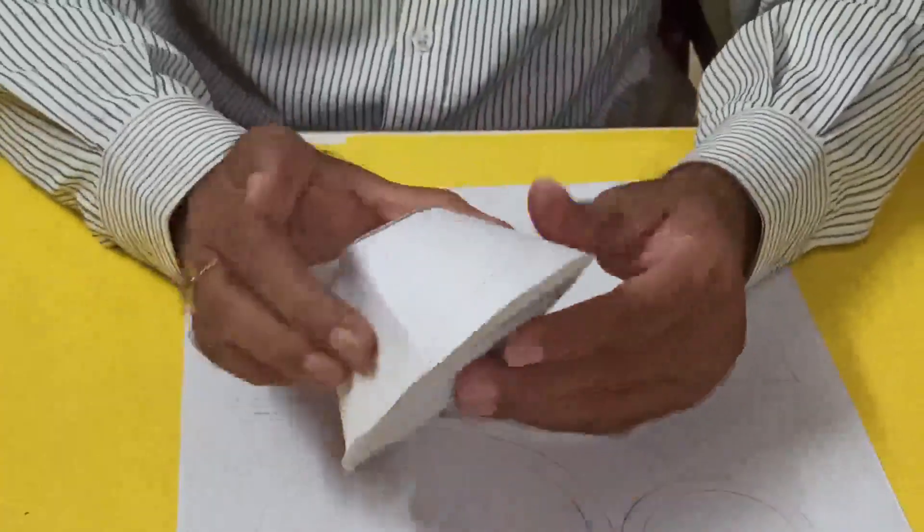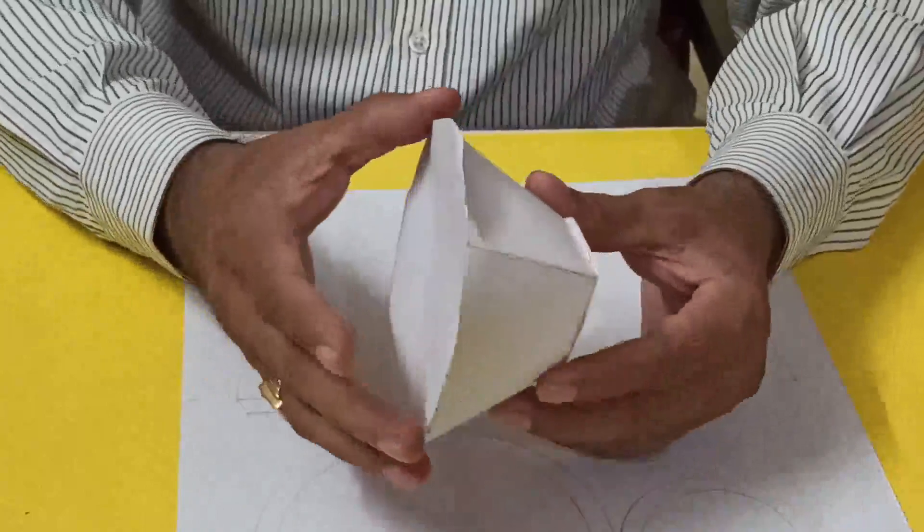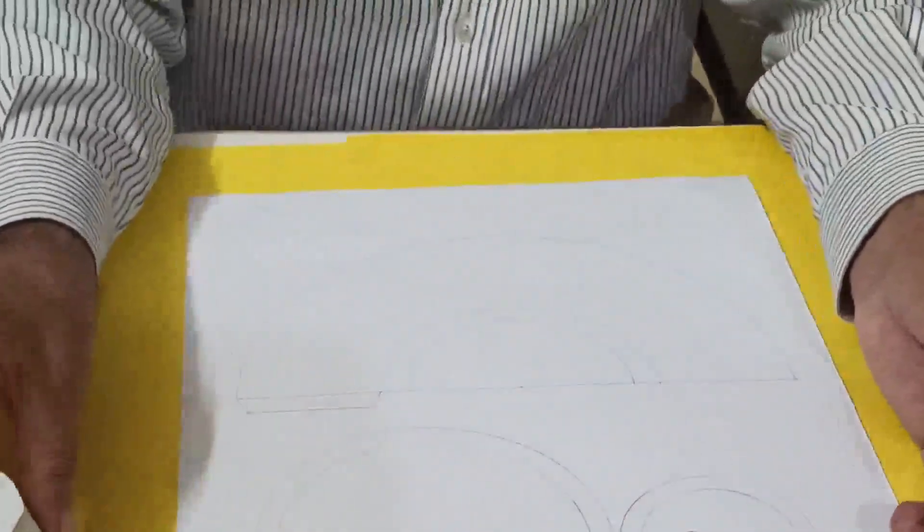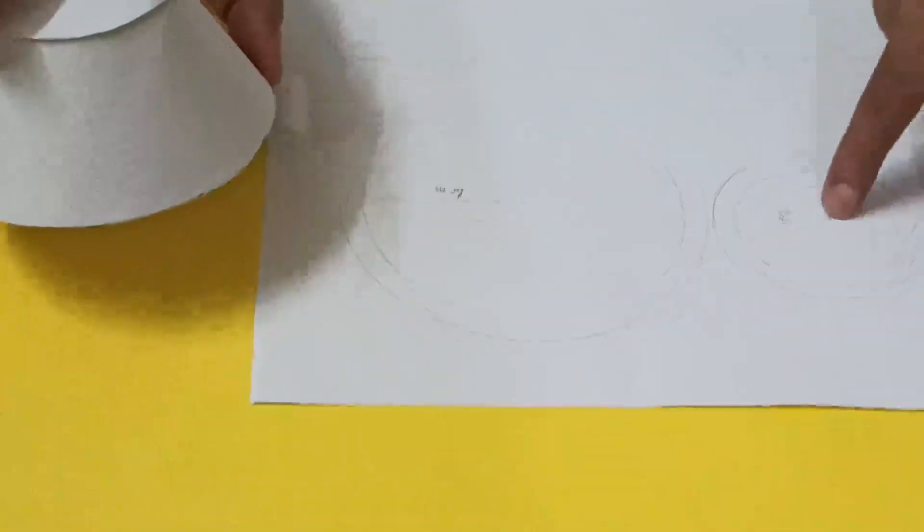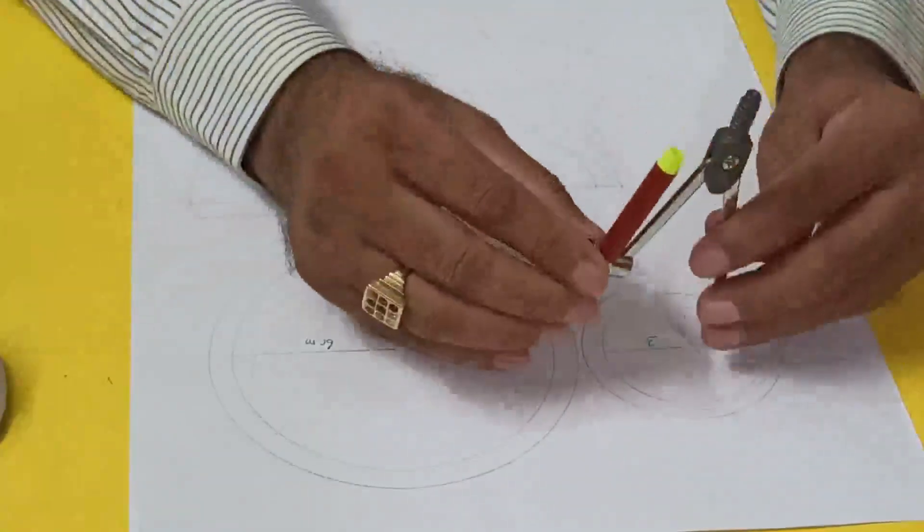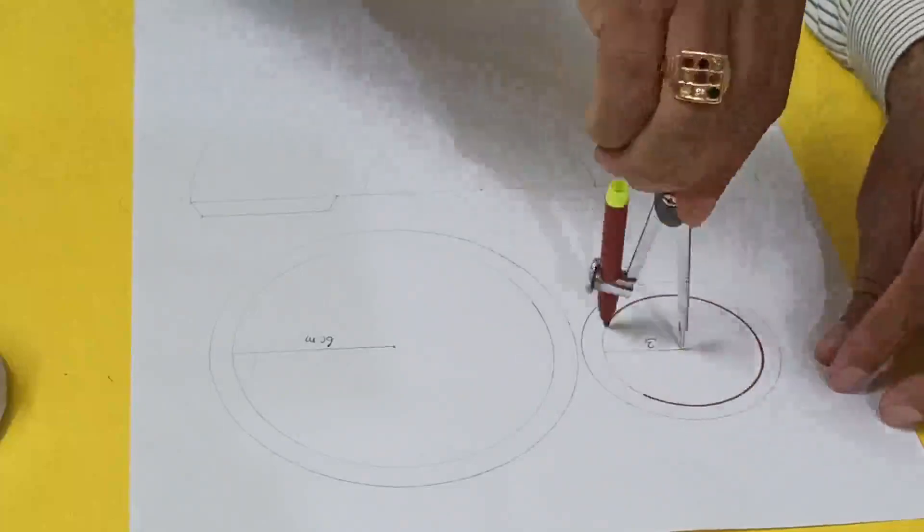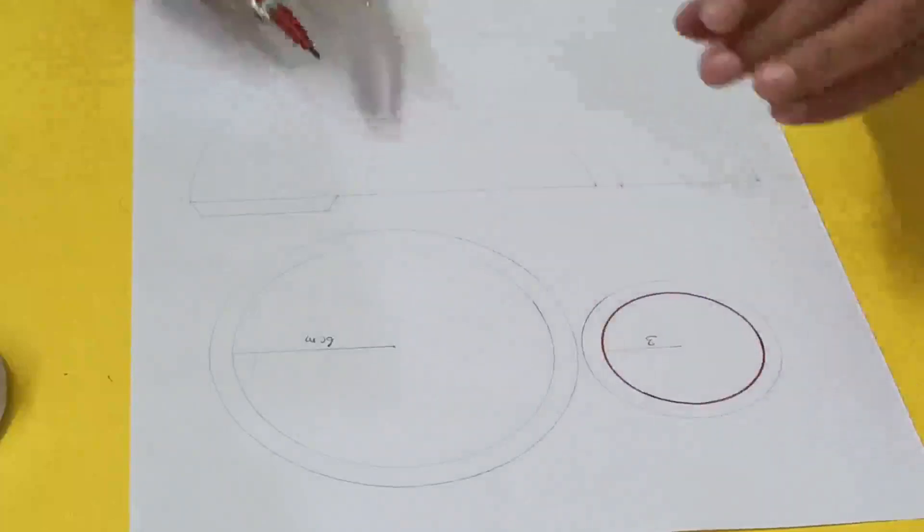It can be used as a mold for decorating candles. You see the lower base, this one, and upper base, this one. Three centimeters—I'm making one circle, three centimeters.